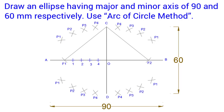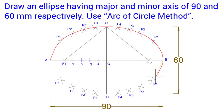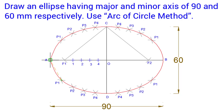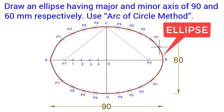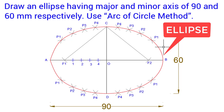Now, with the help of a French curve, draw a smooth curve passing through all the derived points. This smooth curve is known as an ellipse. I hope you understood it. If you have any questions, let me know in the comment box.